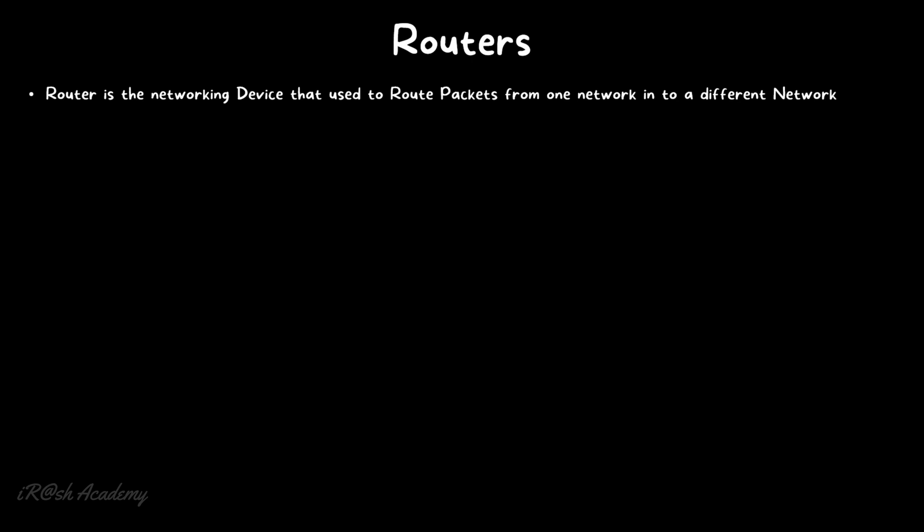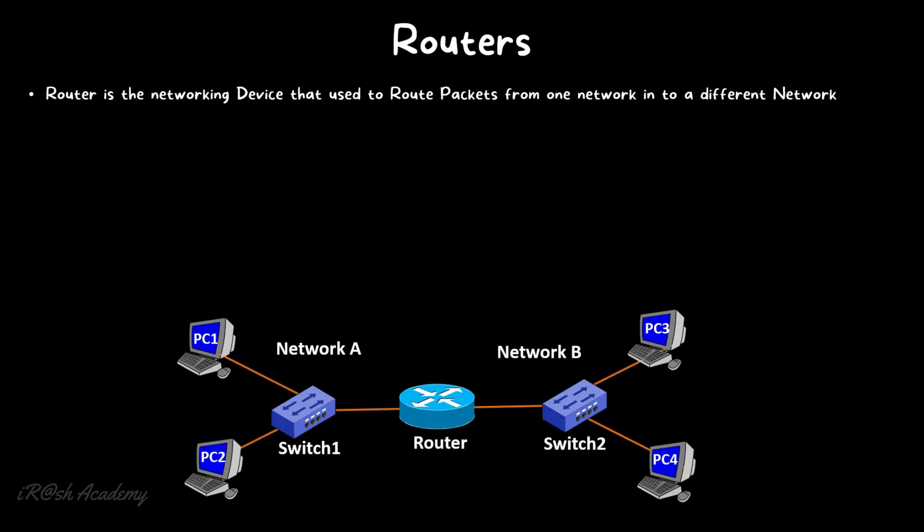Routers route packets from one network into a different network. Consider the image on screen: two networks, network A and network B, are connected at two different router interfaces. PC1 and PC2 are connected to network A via switch 1, and PC3 and PC4 are connected to network B via switch 2. By default, PC1 and PC2 can communicate without issue since they are in the same network, but when PC1 wants to communicate with PC4, the router must perform routing between the two networks.